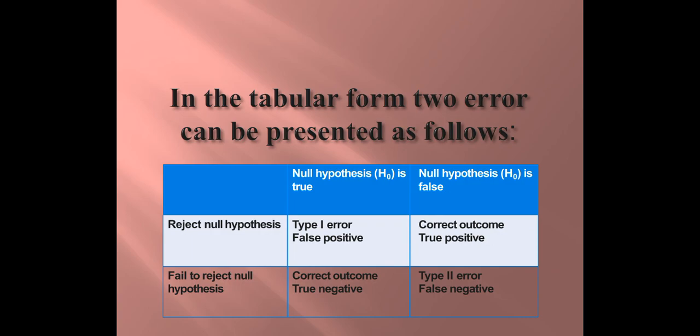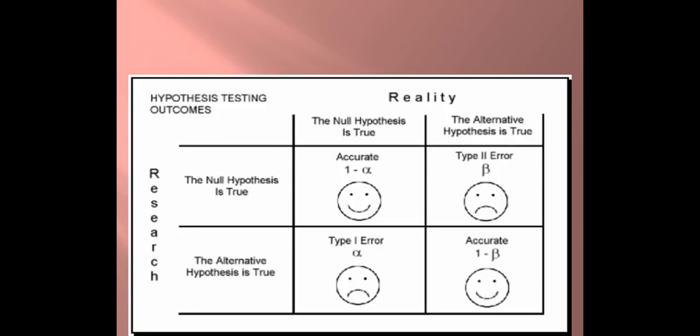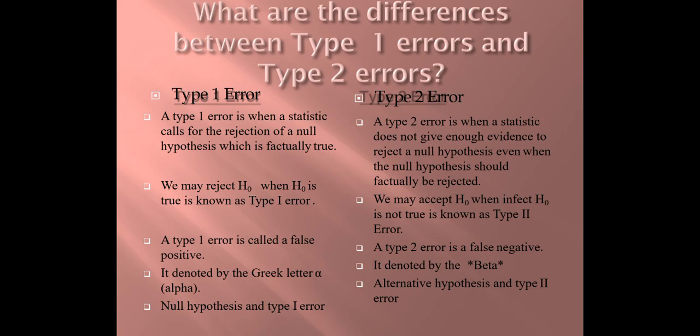In tabular form, the two errors can be presented as follows: when the null hypothesis is true but we reject it, that is Type 1 error — also called false positive. When the null hypothesis is false and we reject it, that is a true positive. When the null hypothesis is true and we fail to reject it, that is a correct outcome — true negative. When the null hypothesis is false and we fail to reject it, that is Type 2 error — false negative. This is also shown in the picture of hypothesis testing outcomes.